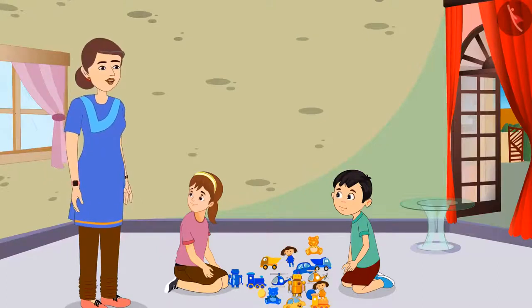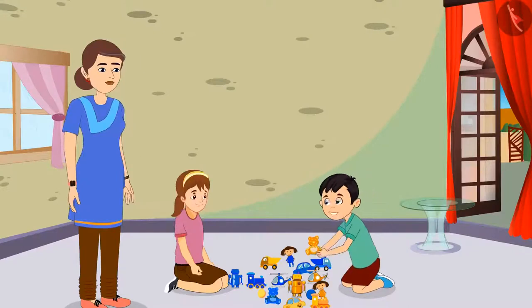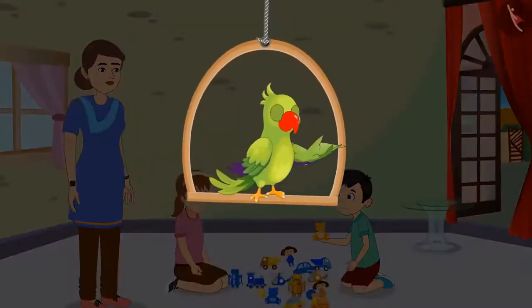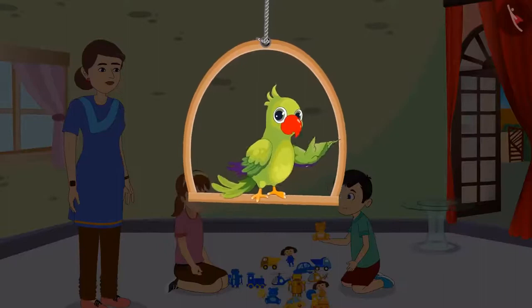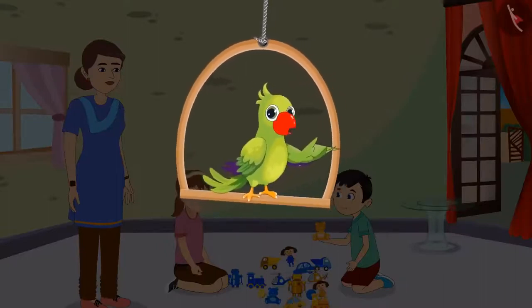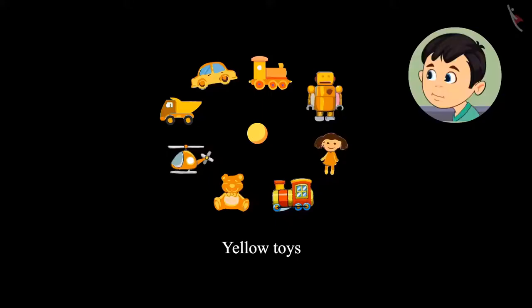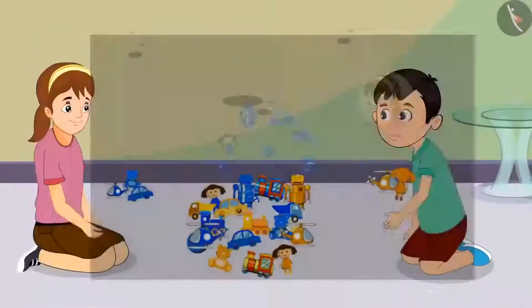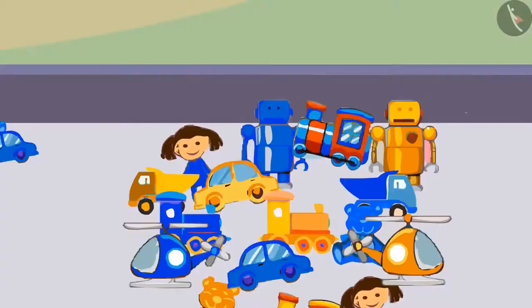Yes auntie, I like yellow color a lot. Seeing the color, it is very easy to sort our toys — now we will separate all our toys. So children, can you tell us which of these toys are Chotu's? You are right children — all the yellow colored toys belong to Chotu, and all the blue colored toys belong to Aarti. Chotu and Aarti sorted their toys.